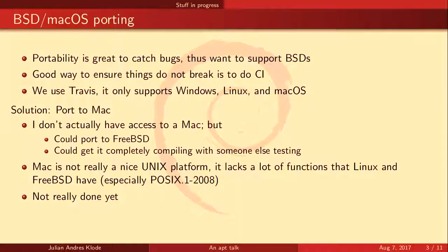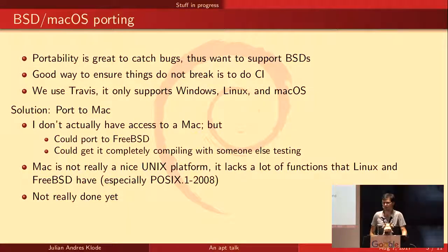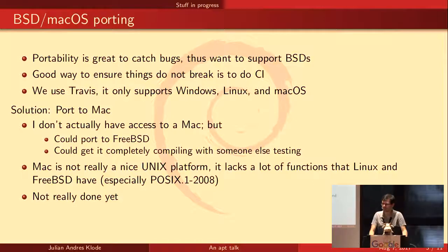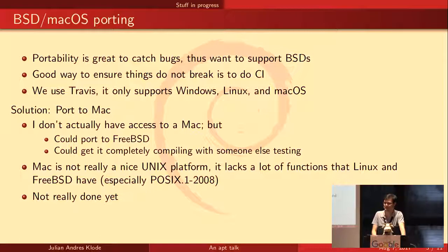I don't really have a Mac. I initially had a port of apt to FreeBSD, but someone requested it at some point and it stopped working. I could get it working on the Mac with help on the IRC channel — I provided some patches, other users tested and compiled it, and reported back that the test suite now runs. But it's not really done yet and it's missing a lot of functions on the Mac, especially those in POSIX 2008 — the whole 'at' family is mostly missing.